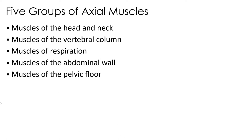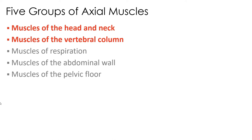Axial muscles are muscles that have both their origin and insertion on the axial skeleton. They can typically be arranged into five different groups: muscles of the head and neck, used for facial expression, chewing, and swallowing; muscles of the vertebral column, which support the head and spinal column; muscles of respiration; and muscles of the abdominal wall and pelvic floor. Today we're focusing on the first two: muscles of the head and neck and muscles of the vertebral column.